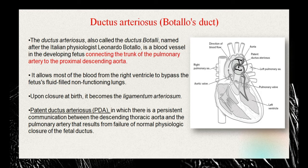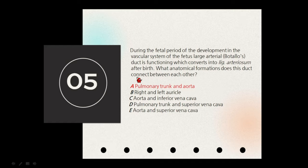The key point: the botallus duct or ductus arteriosus connects the trunk of the pulmonary artery to the proximal descending aorta in the developing fetus — pulmonary artery and aorta.